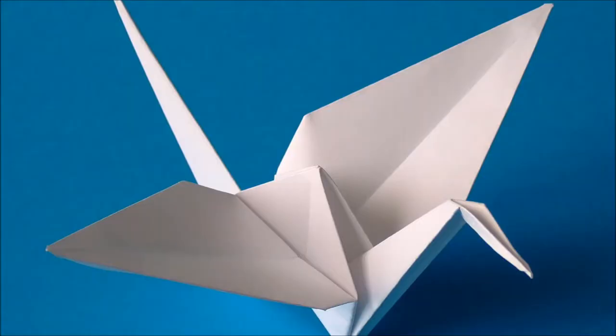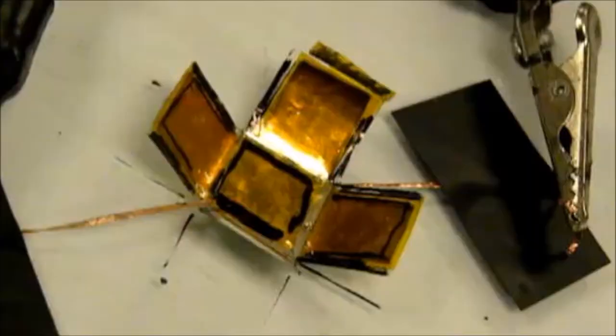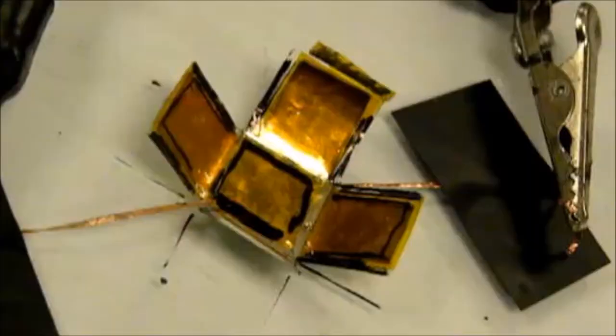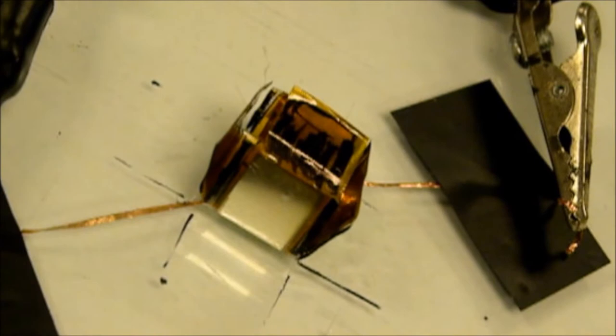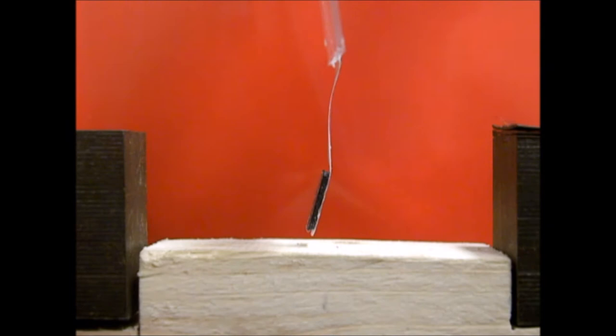So one project has to do with origami engineering, and that's where we're using ideas from origami and applying those to engineering materials and engineering structures. We've been looking at what we call self-folding origami where we incorporate active materials so that we could, for example, start from a flat sheet and fold into some shape upon application of an electric field.